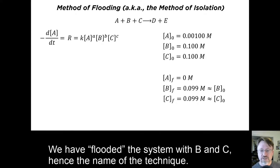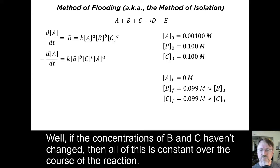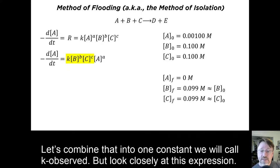We have flooded the system with B and C, hence the name of this technique. So what does that mean for our rate law? Well, if the concentrations of B and C haven't changed, then all of this is constant over the course of the reaction. Let's combine that into one constant we will call K observed.